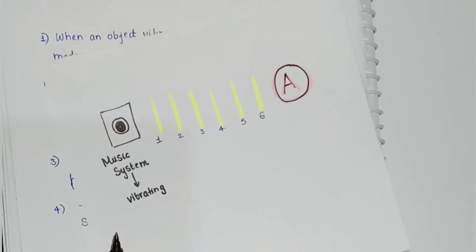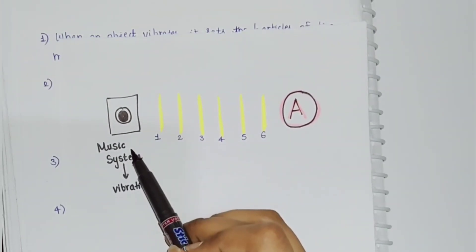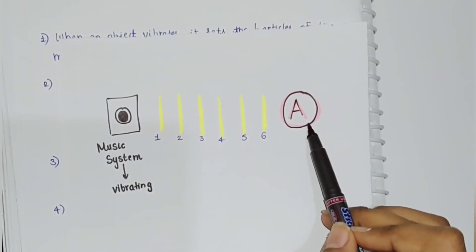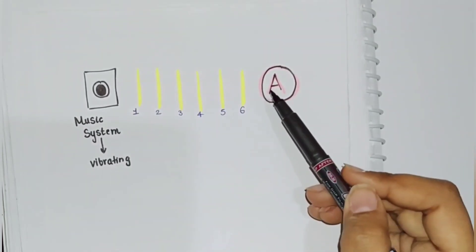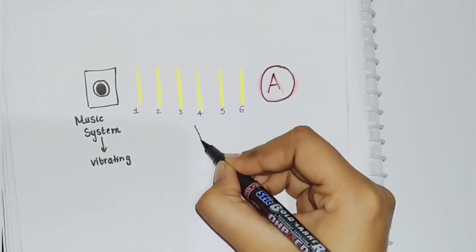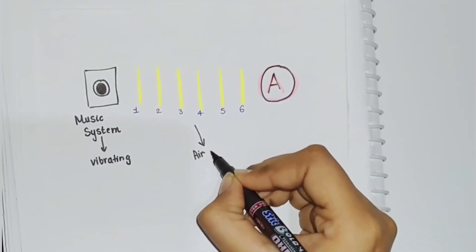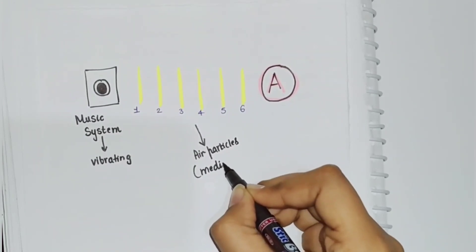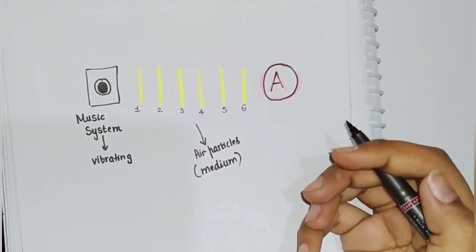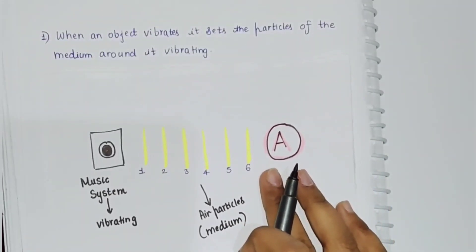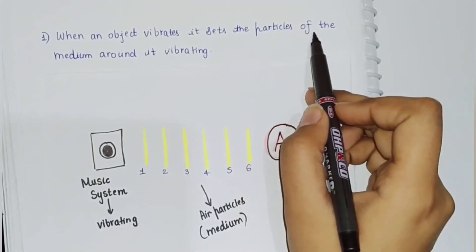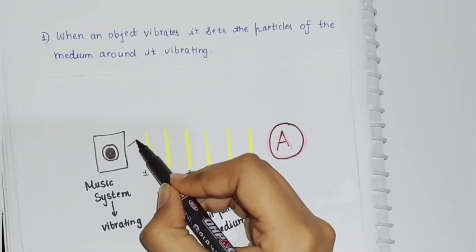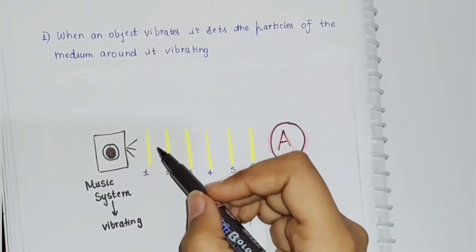Let's take the same example — there is a music system, and it is vibrating. Person A is standing over here. As you can see, particles 1, 2, 3, 4, 5, 6 are the air particles. The music system is vibrating and producing vibrations.